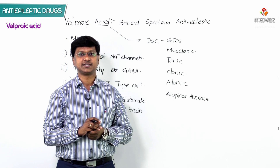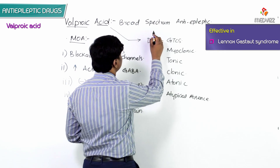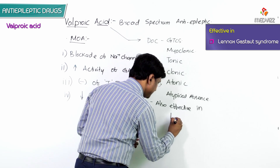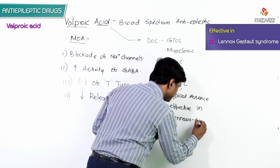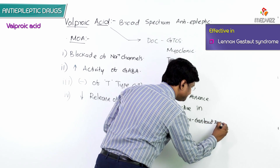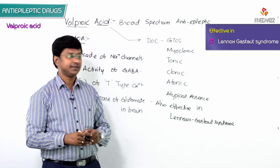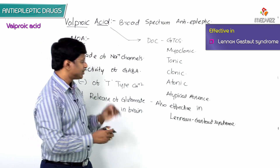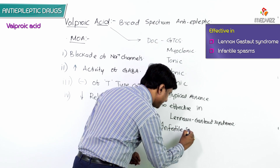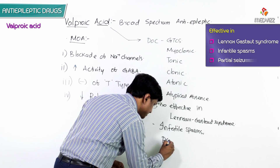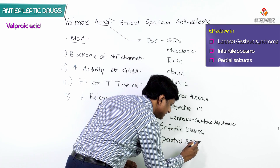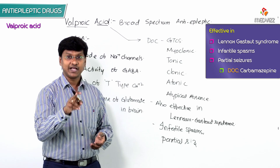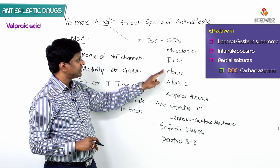Valproic acid is also effective in Lennox-Gastaut syndrome, which is an epilepsy associated with cognitive impairment. It is also used in infantile spasms and partial seizures. For partial seizures, the drug of choice is carbamazepine, but valproic acid can also be used.